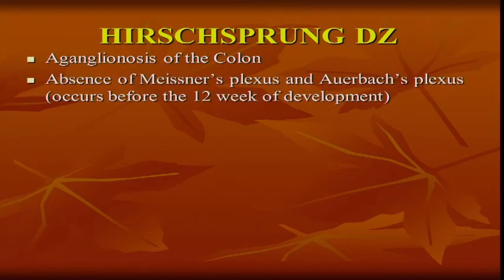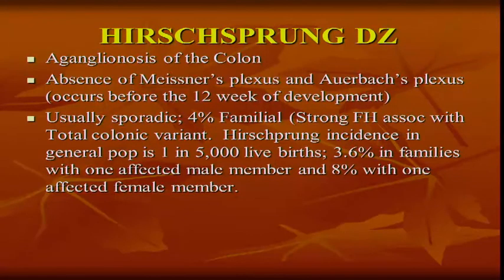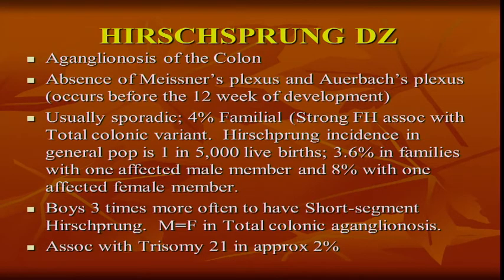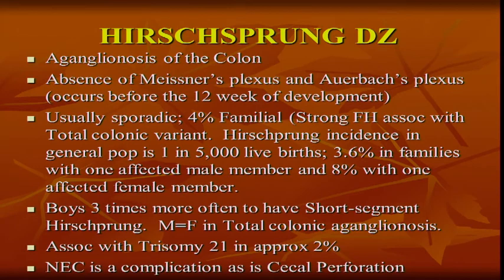Hirschsprung's disease is aganglionosis of the colon — absence of Meissner's plexus and Auerbach's plexus. Usually sporadic, 4% familial. In the general population, 1 in 5,000 live births. If you have one affected family member, about 3.6% chance of another. Usually affects males, but if it's total colonic aganglionosis, male and female are equal. It can be associated with Down syndrome in about 2%. Complications include perforation, and it can cause necrotizing enterocolitis. If the distal colon is obstructed, the cecum is what could perforate — Laplace's law.